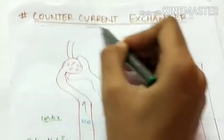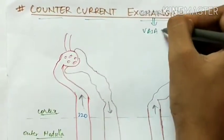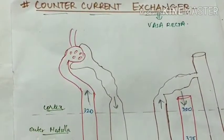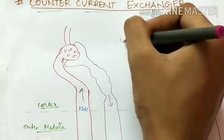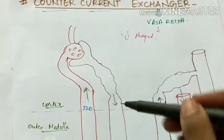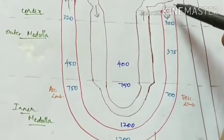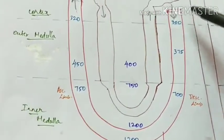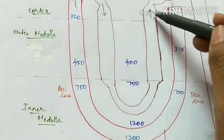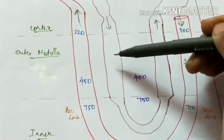Let us now see about the counter-current exchanger, which is formed by the Vasa Recta. This is a U-shaped tubule parallel to the loop of Henle. The descending limb of Vasa Recta runs along the ascending limb of the loop of Henle, and the ascending limb of Vasa Recta runs along the descending limb of the loop of Henle.